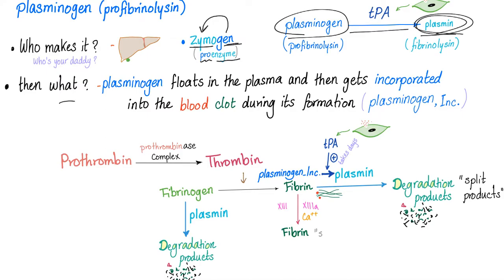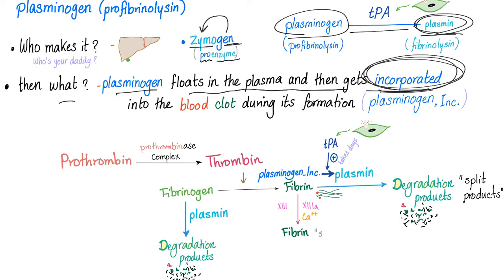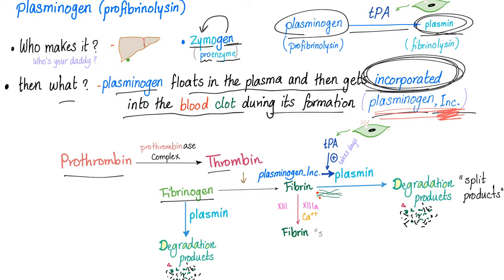Plasminogen floats around in the plasma, then gets incorporated, gets trapped, gets absorbed into the blood clot during its formation. Prothrombin is converting into thrombin — we're forming the clot, secondary hemostasis. Converting fibrinogen into fibrin. At that moment, plasminogen is being incorporated among the fibrin, among the clot, until TPA arrives and activates plasminogen by converting it into plasmin, which takes days.